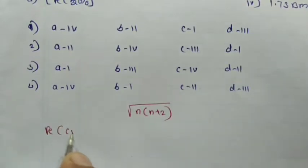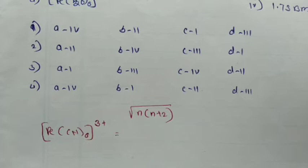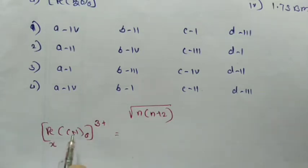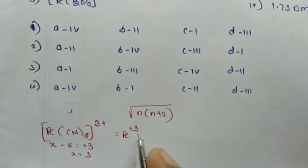See first complex Fe(CN)₆³⁻. First, find out the oxidation state of iron. Fe is considered X, charge of CN is minus 1, so 6 CN gives minus 6 equal to minus 3 overall, giving X equal to plus 3. The oxidation state of iron in this complex is plus 3.